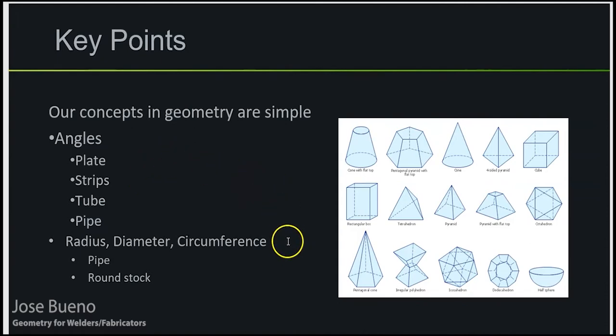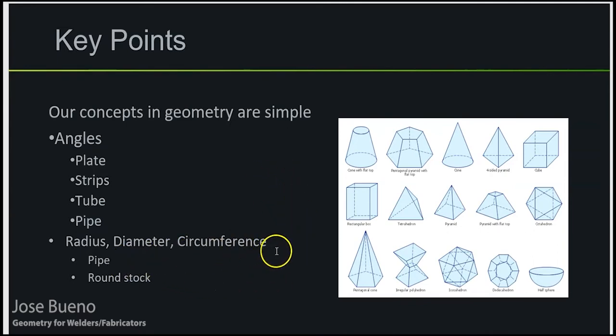When we talk about radius, diameter, and circumference, what I'm talking about is any material that's basically round. So if you start thinking about pipe, circular tubing, round stock — anything that is round — we're going to be dealing with radius, diameter, and circumference in some way, shape, or form.